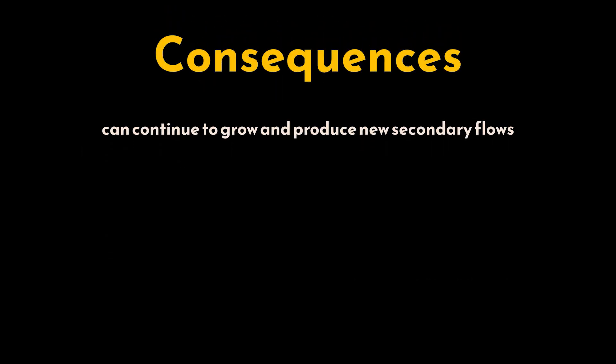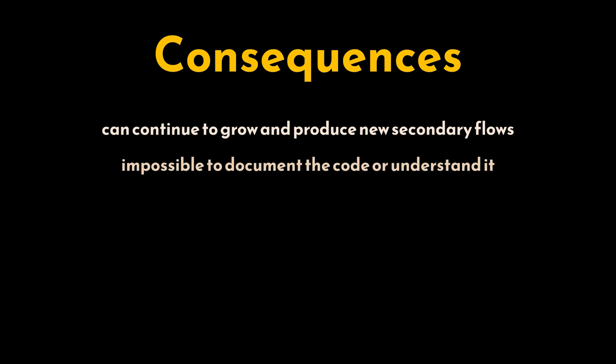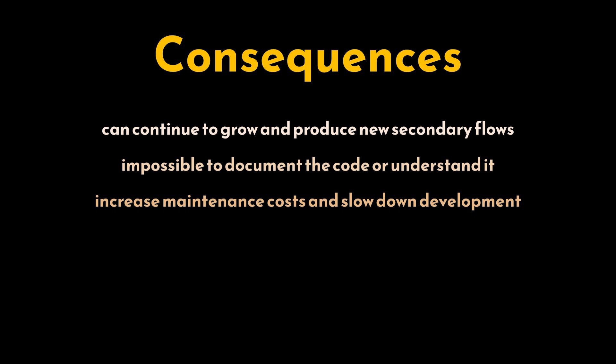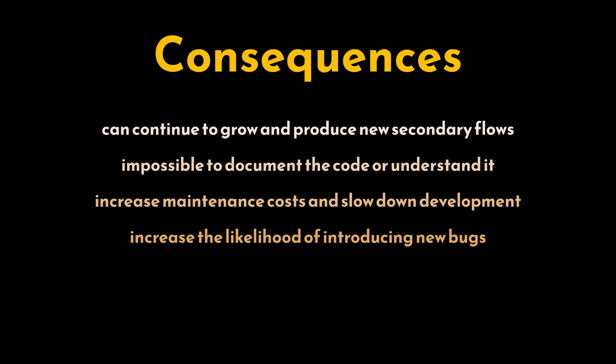If existing lava flow code is not removed, it can continue to grow and may produce new secondary flows as developers try to work around the original ones, complexifying the problem. It will rapidly become impossible to document the code or understand its architecture enough to make improvements. This will increase maintenance costs and slow down development, as adding new features or making changes will take longer since developers have to navigate through the tangled codebase. The complexity of the code will also increase the likelihood of introducing new bugs or activating old ones.